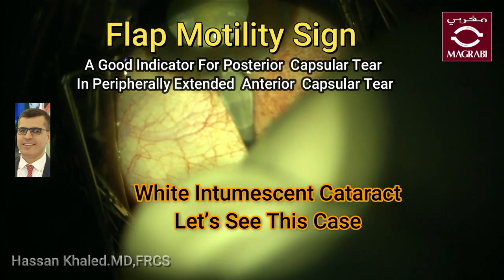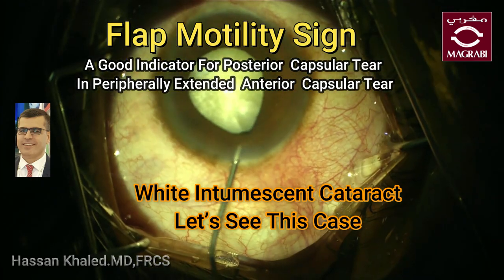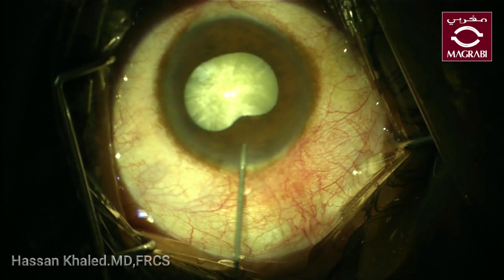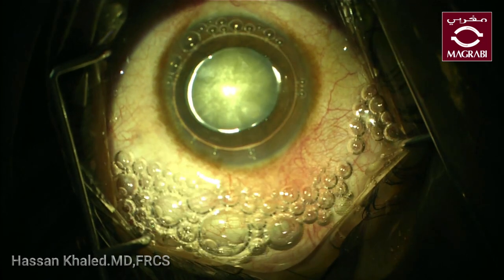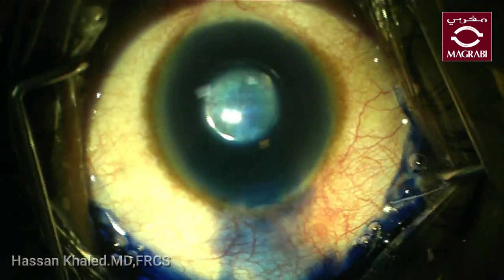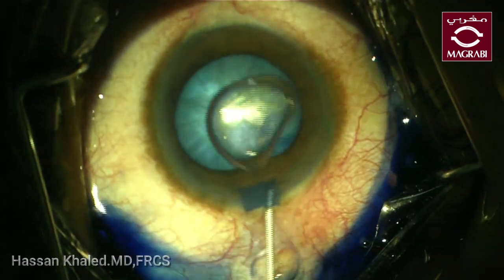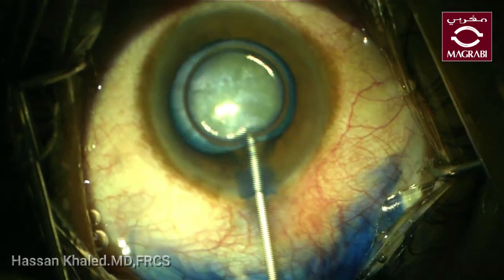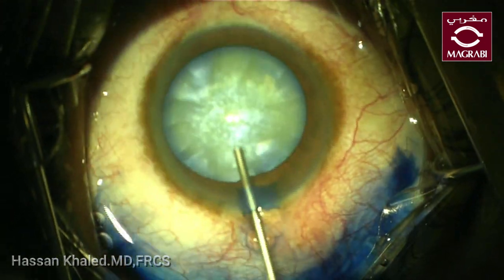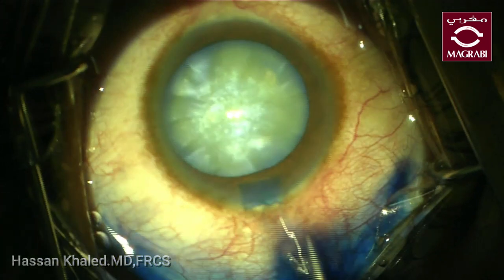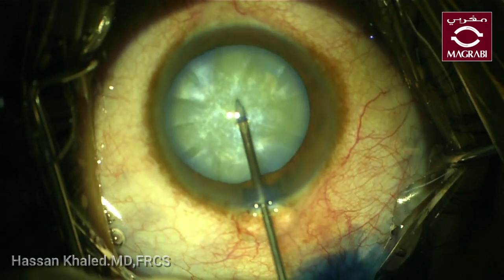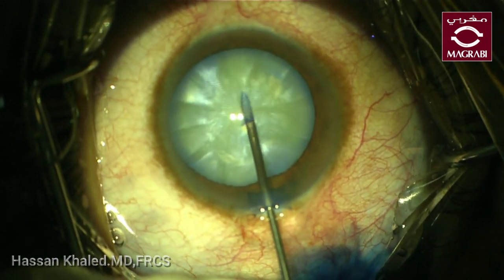Here I'm going to talk about the flap mobility sign. This is a case of white intumescent cataract in a 40-year-old male patient. The most challenging aspect in this case is the high incidence of peripheral extension during anterior capsulorrhexis, with or without post-equatorial extension and posterior capsular tear.